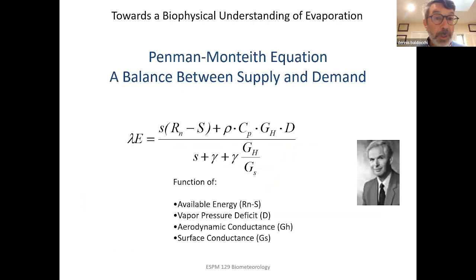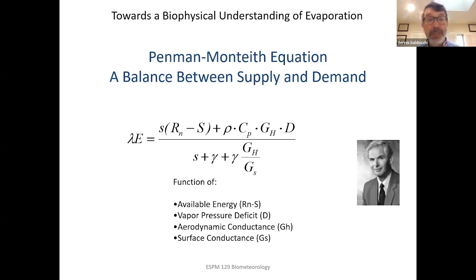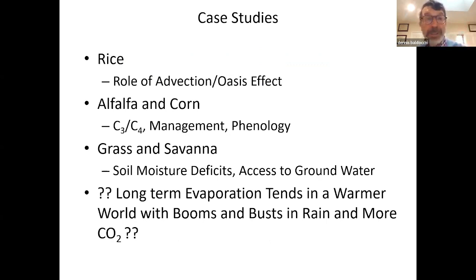Once we have these measurements we want to interpret and quantify them. We use the Penman-Monteith equation, which provides a nice balance between supply and demand to help understand latent heat evaporation. The terms include available energy, an evaporative demand driven by the humidity deficit and wind mixing, divided by a term called surface conductance — which is a function of leaf area index, stomatal conductance, leaf nitrogen, and soil moisture. I'll give you some contrasting examples relevant to this community: rice, alfalfa, and corn — because there's a lot of irrigated agriculture in Saudi Arabia — and then lessons from native ecosystems, our annual grasslands and savanna.